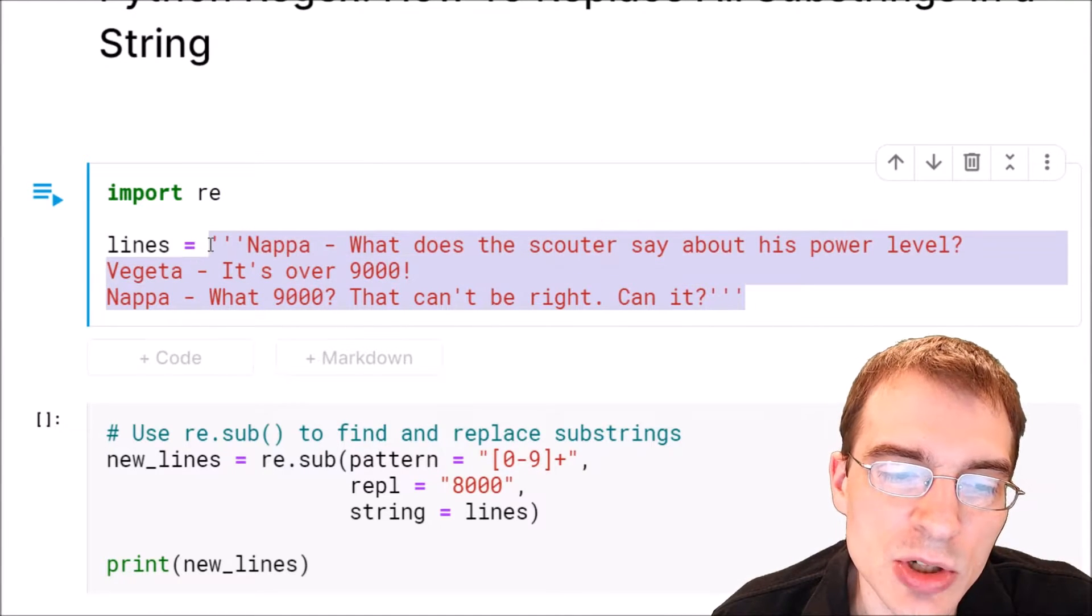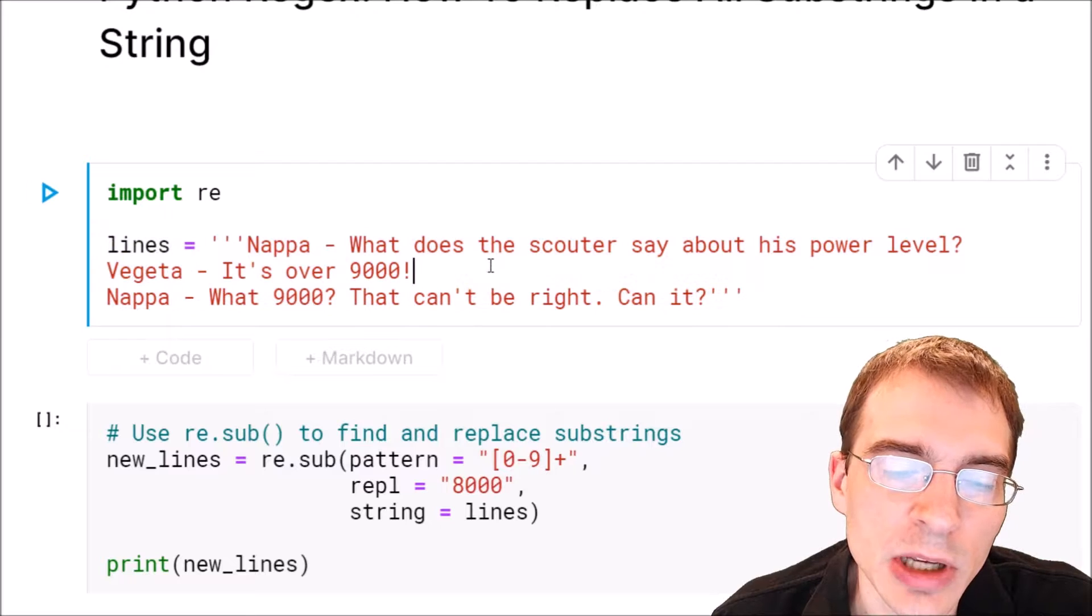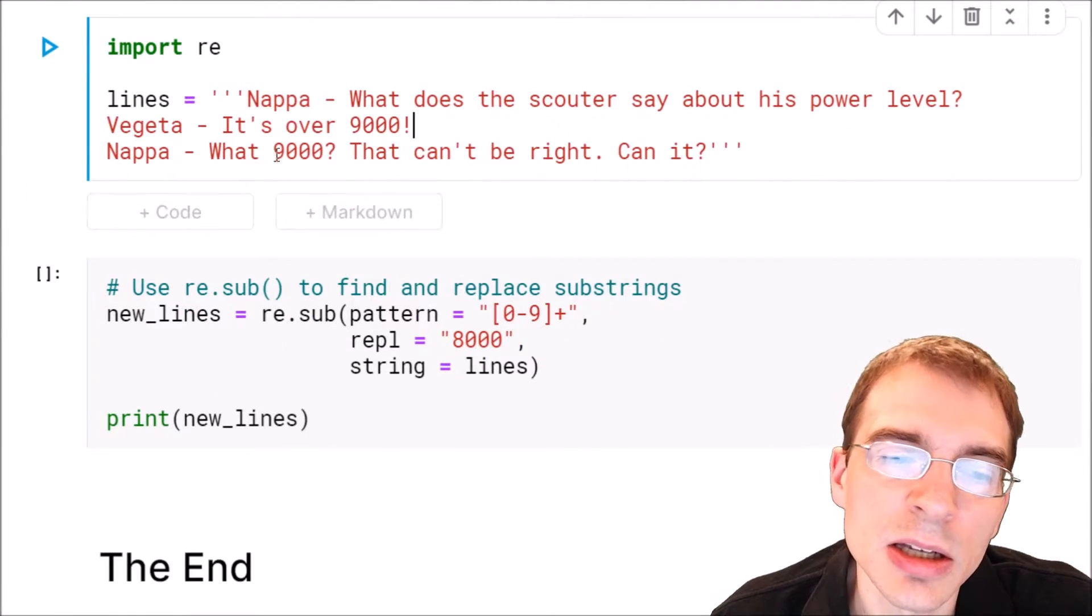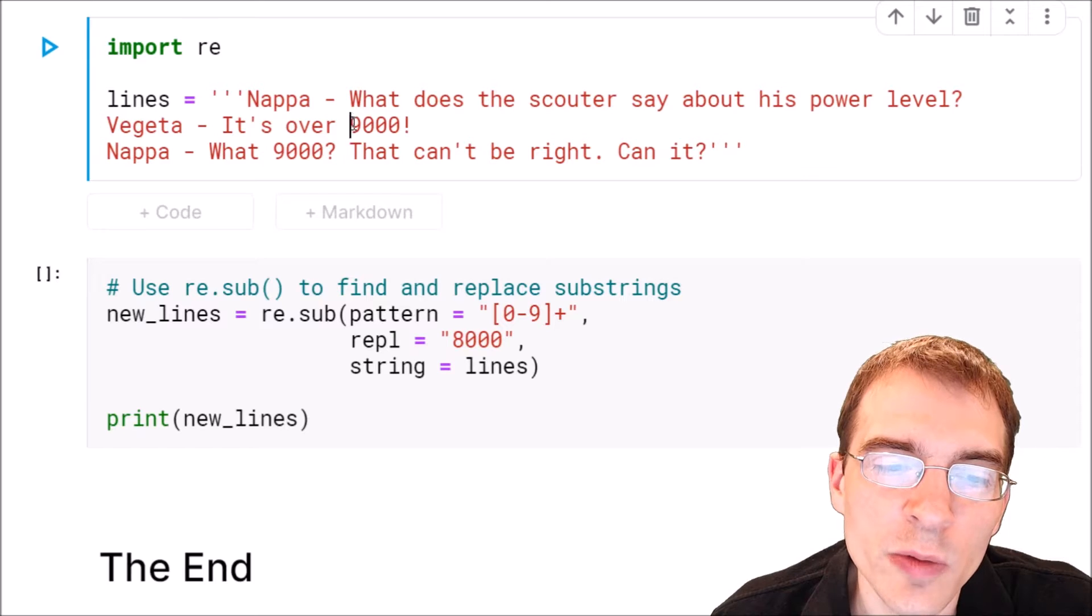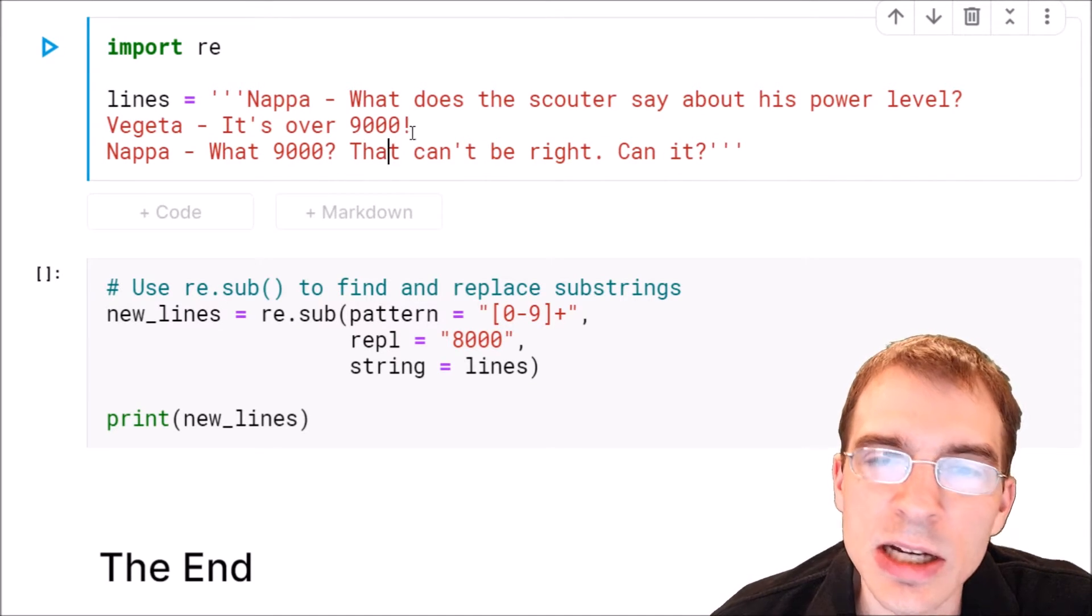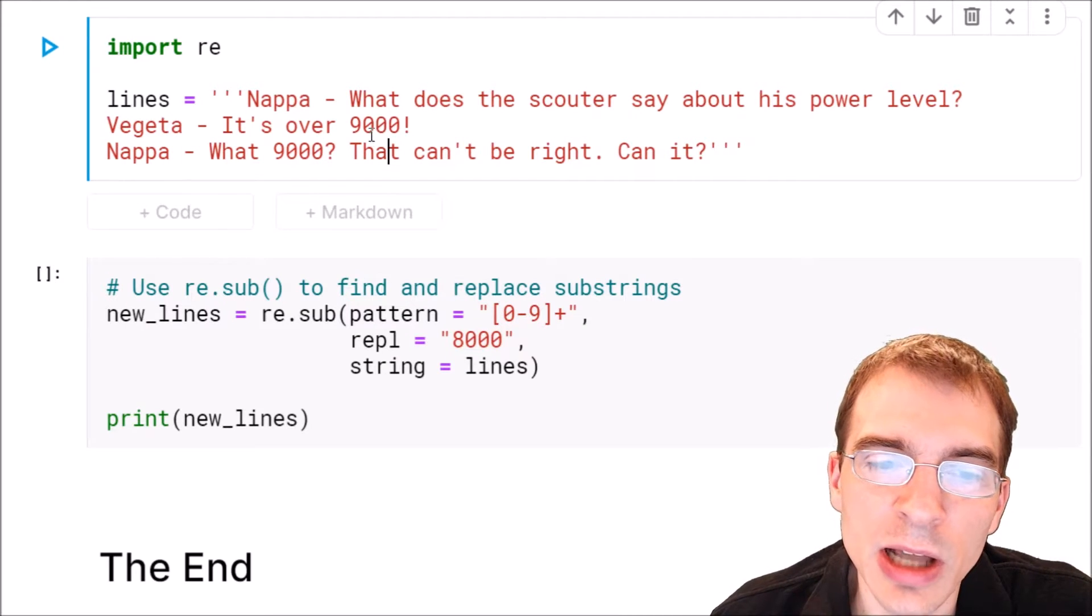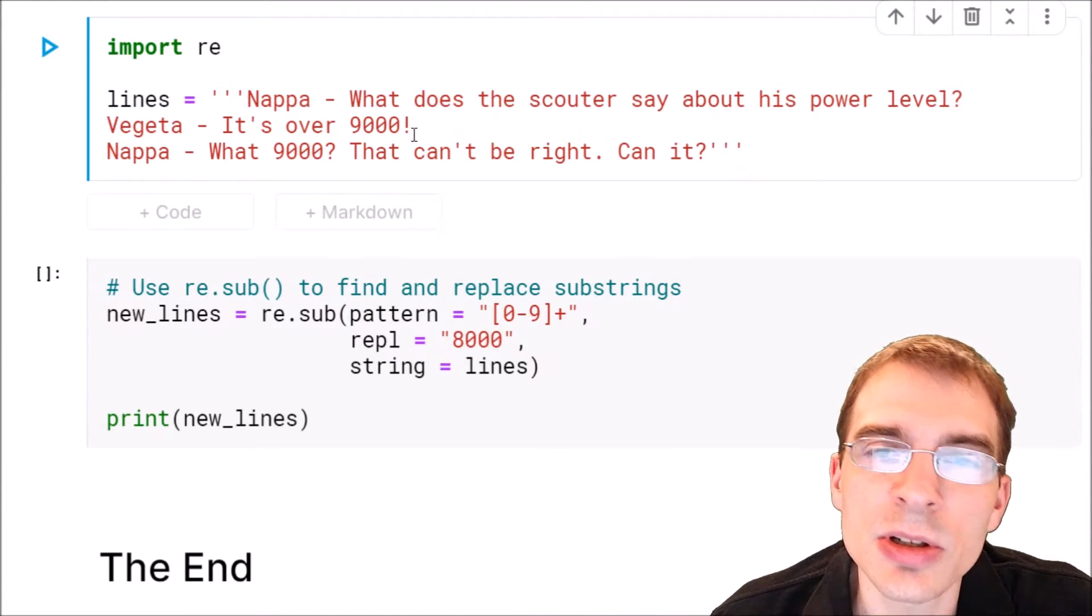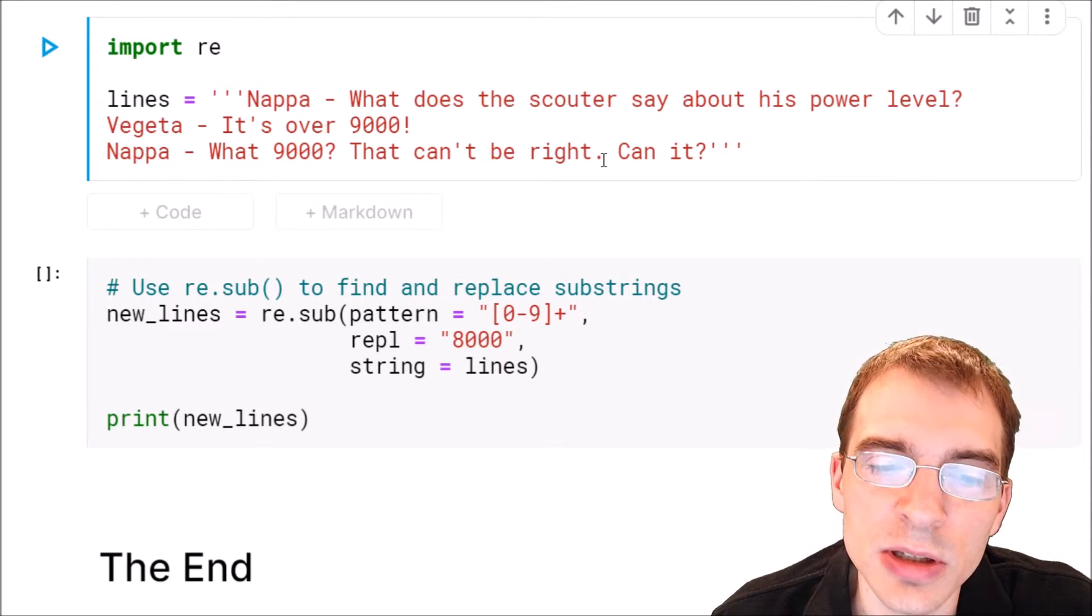Then we're just going to save a string as the lines we're working with here. We can notice in this little text dialog we have a couple numbers, over 9,000 here and 9,000 here. Well it turns out that in the original lines this should have been 8,000. So we're going to find these two 9,000s and substitute 8,000 within the text string.